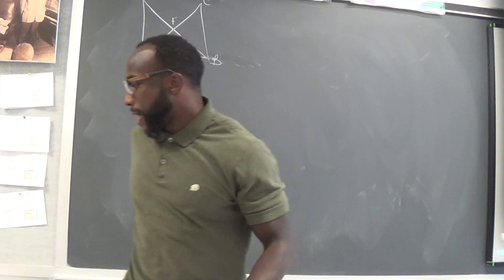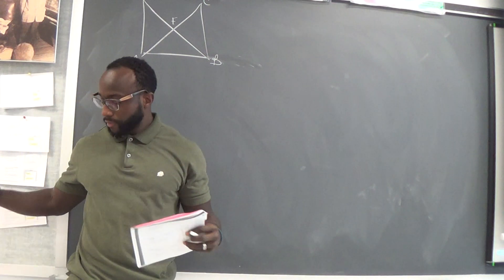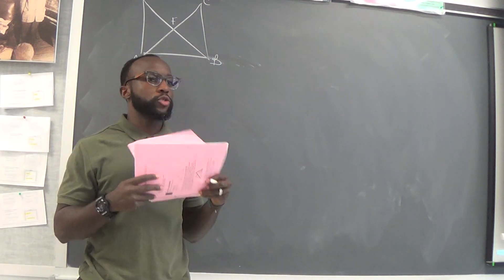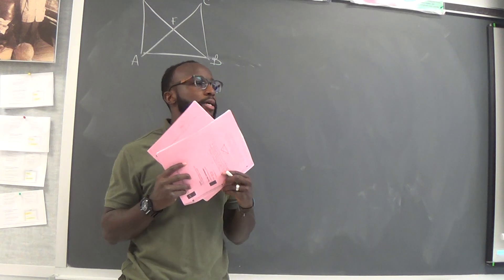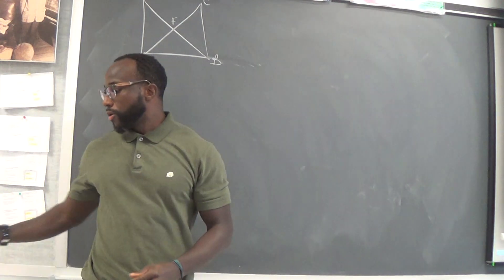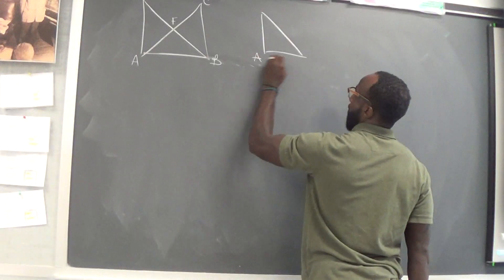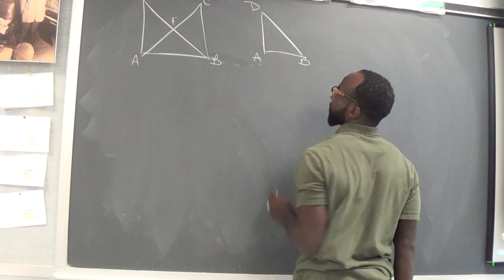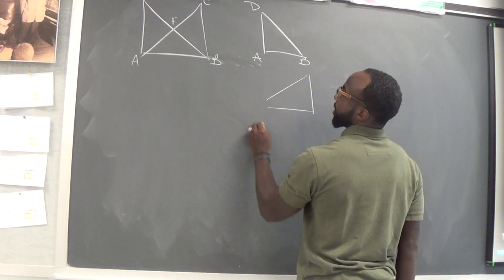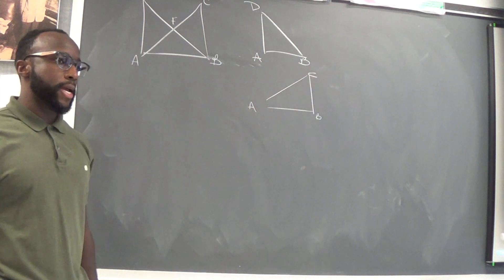Now the thing about overlapping triangles is this — this is what I would advise you all to do. If I had these two objects overlapping, what's the best way to see both of them? Separate them, right? So with overlapping triangles, the best thing to do is to separate the two. You will redraw the first triangle — that's going to be A, B, D — and then redraw the second triangle, which will be A, B, C. So now we see both of our triangles.